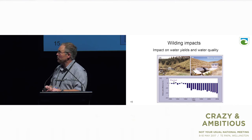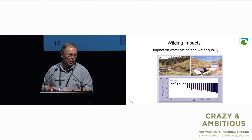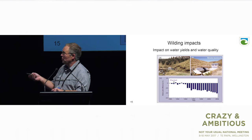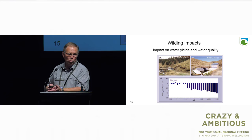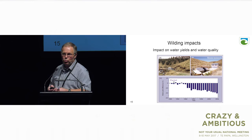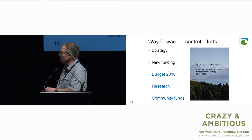I've also put a slide on the impacts on water. Wilding conifers impact water yield and water quality. In this study, a catchment went from native tussock to conifer forest and in 22 years the water yield reduced 42%. Less water, poorer water quality has an impact on threatened freshwater species.